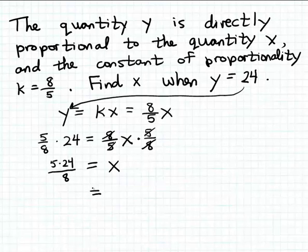And we can simplify this quotient easily by first dividing 8 into 24, because 8 goes into 24 three times, and then multiplying 5 times 3. So we get here that x is equal to 15.